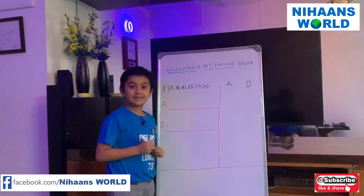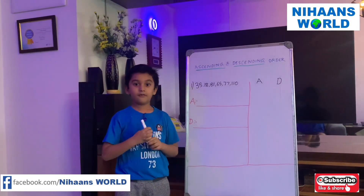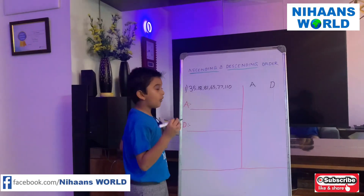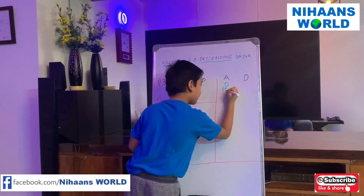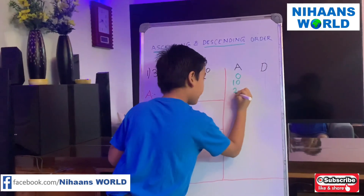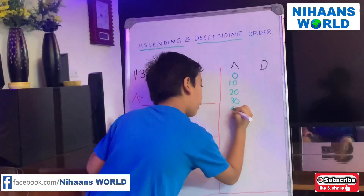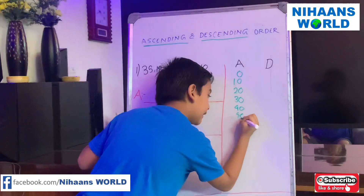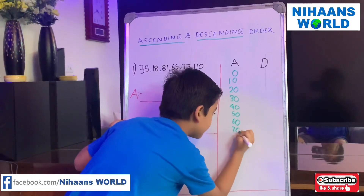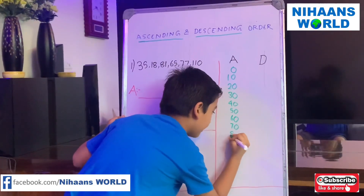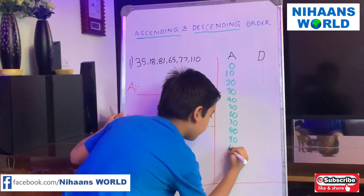Ascending order is from smaller to bigger. The numbers 0, 10, 20, 30, 40, 50, 60, 70, 80, 90, 100 are written in ascending order.